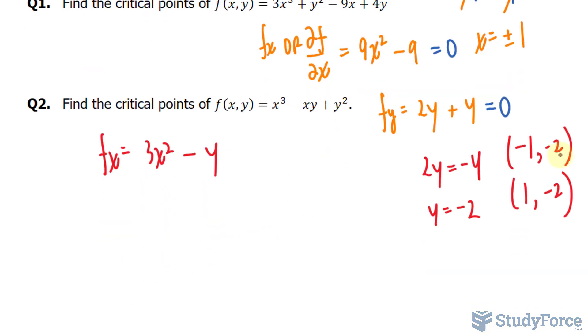Eventually, we'll set this equal to 0. But before we do, the partial derivative with respect to y, that's 0. That becomes negative x, and this becomes plus 2y. Let's set both of these now to 0.